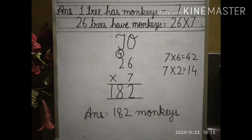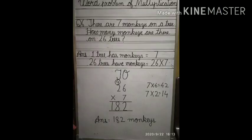Now we will write: answer is equal to 182 monkeys. Understand, students, how to solve a word problem of multiplication. Students, follow the pattern while doing the word problem of multiplication.